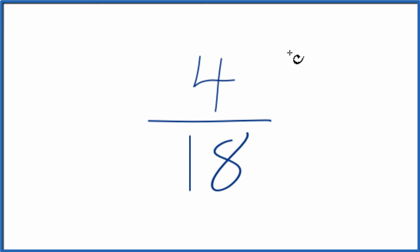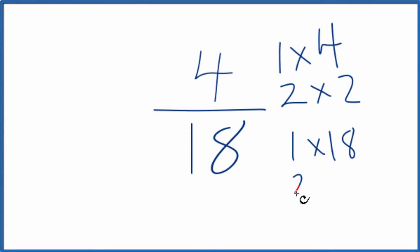So for 4, we could multiply 1 times 4. That would give us 4 or 2 times 2, but that's it. For 18, we have 1 times 18, 2 times 9, 3 times 6, and that's all.